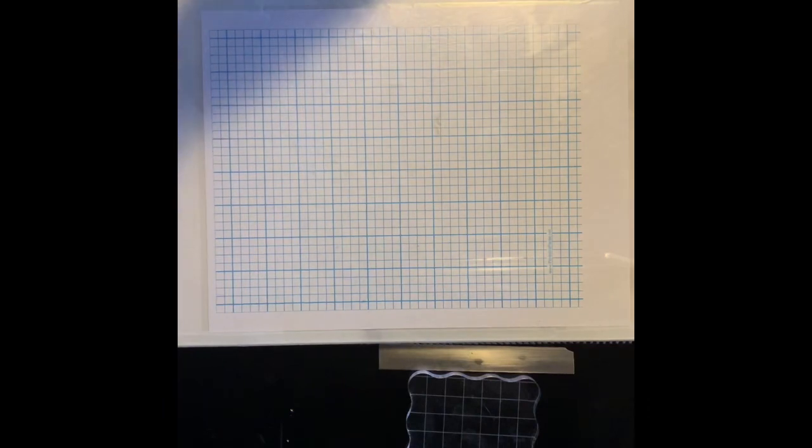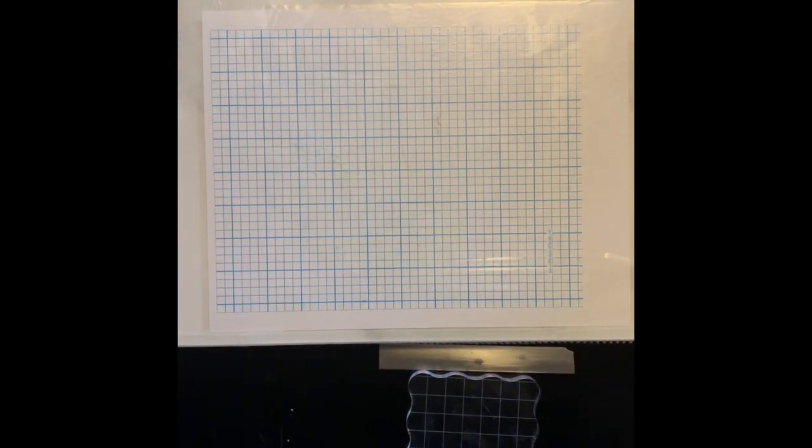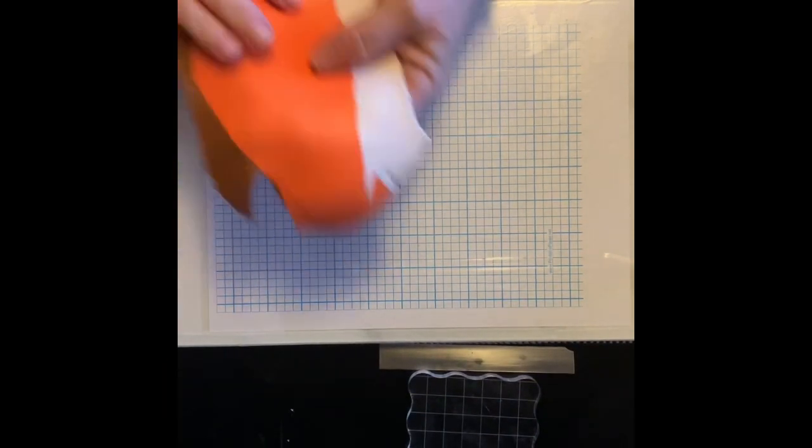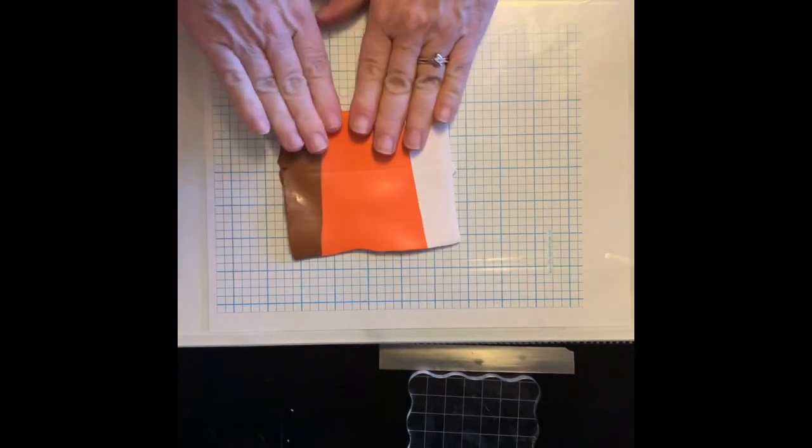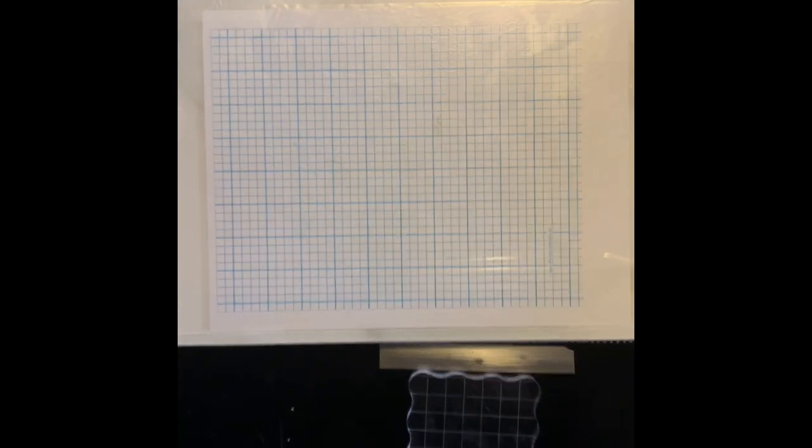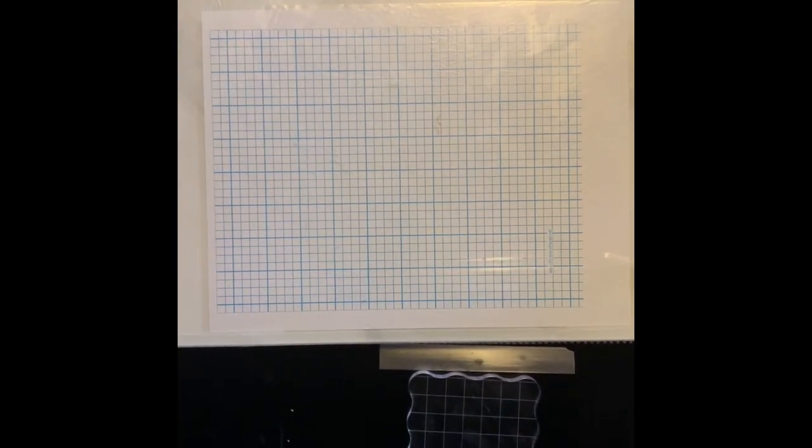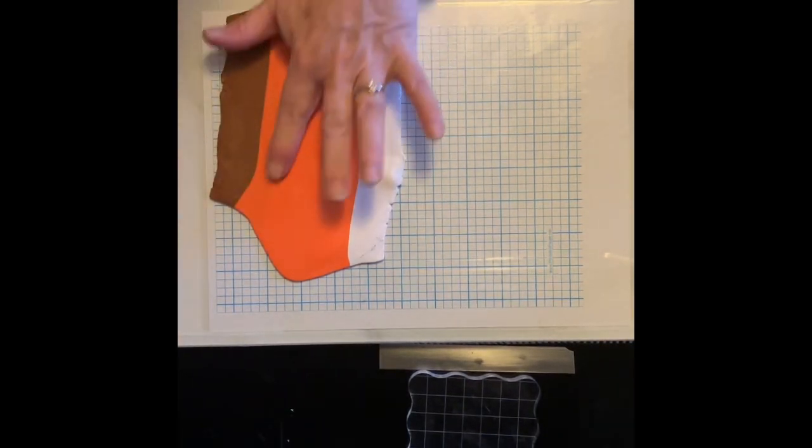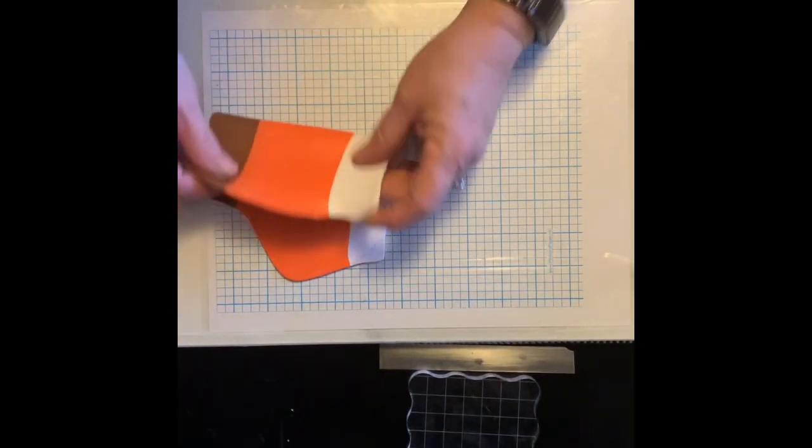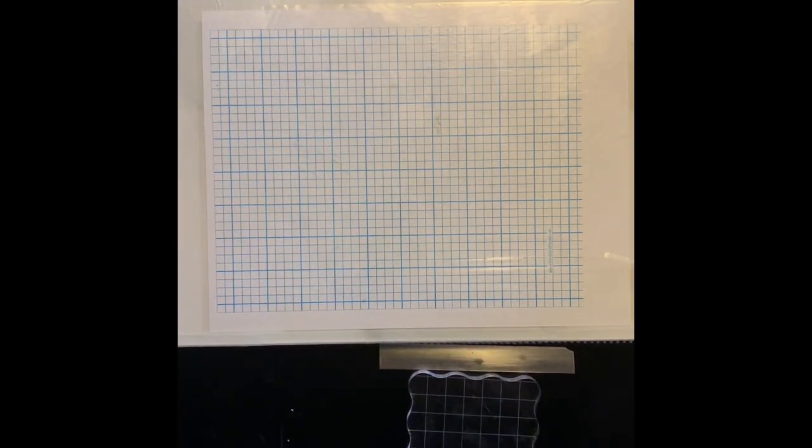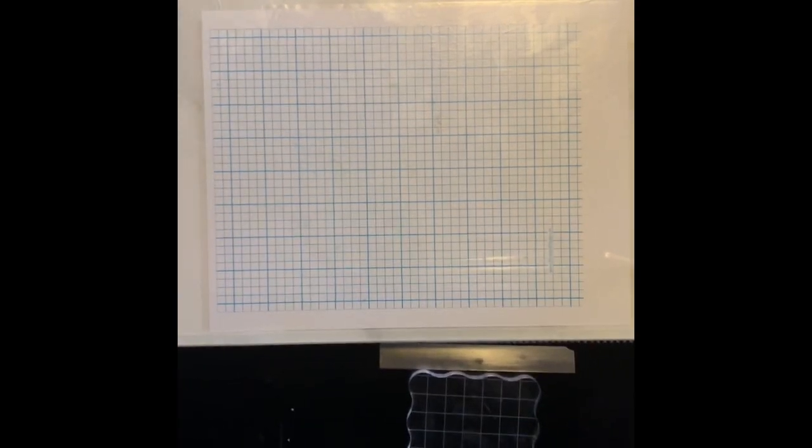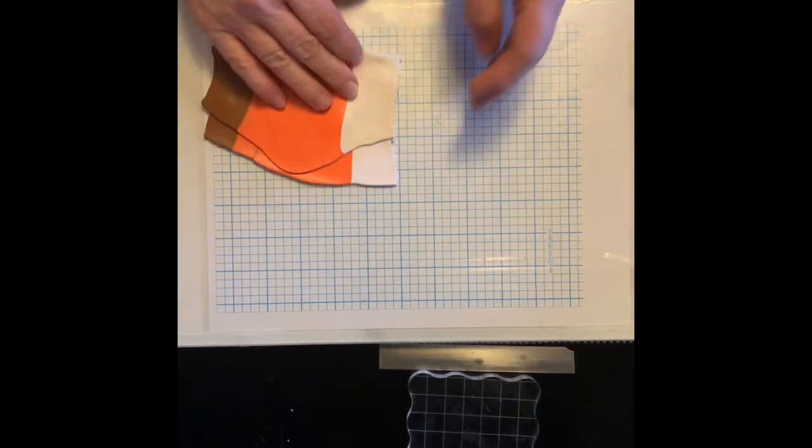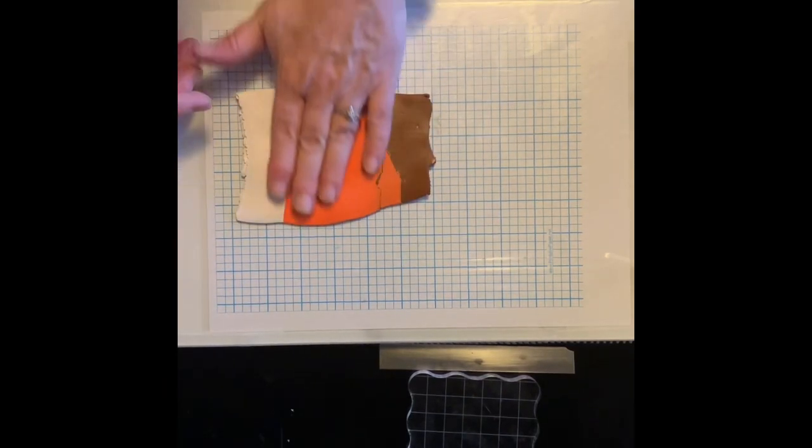This one here is about one block. And this one here is less than one block. Probably half of one. Maybe a little more. Anyway, I'll bring that through again. And we're going to keep on doing that until we get a nice blend. And we're starting to get one now.